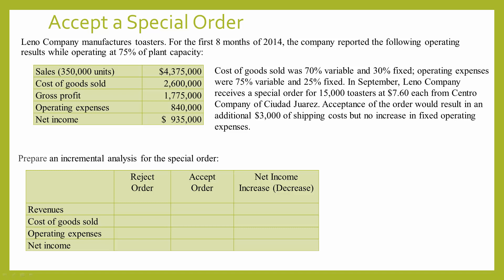We have a table that shows their sales, cost of goods sold, etc. Cost of goods sold was 70% variable and 30% fixed. Operating expenses were 75% variable and 25% fixed.